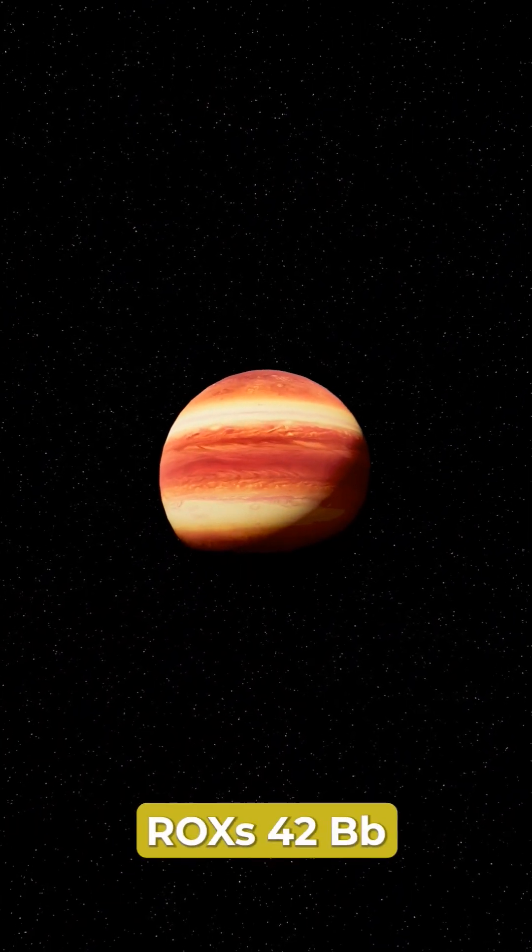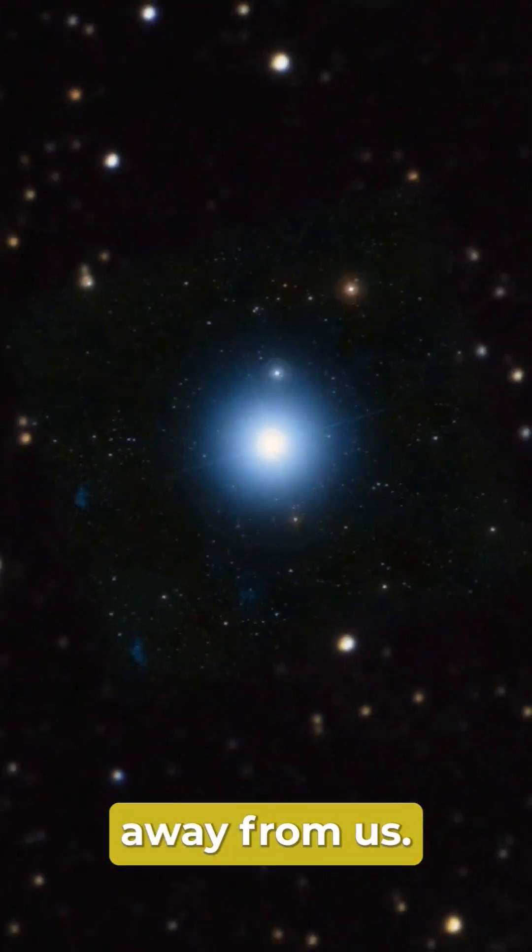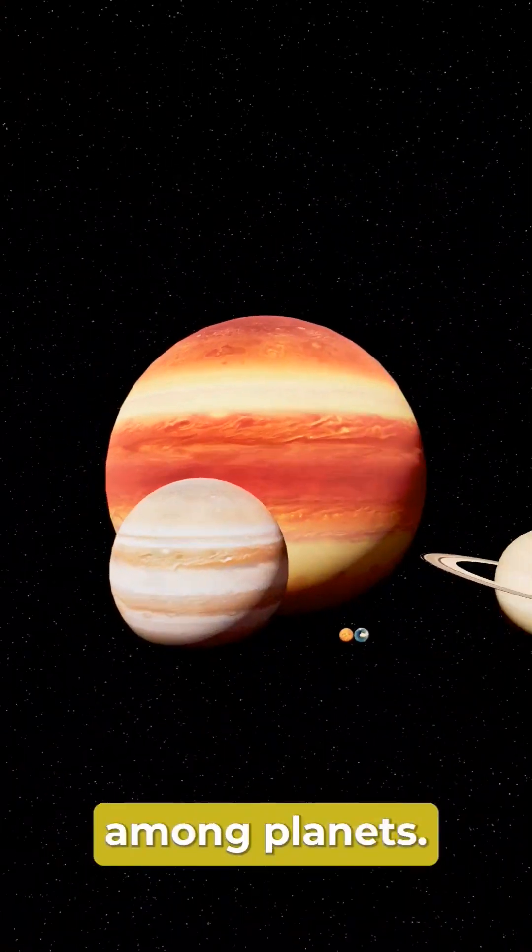The biggest planet ever discovered is ROXS 42BB, a planet located about 440.3 light-years away from us. It is a true giant among planets.